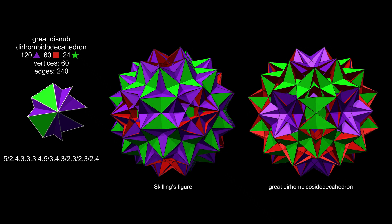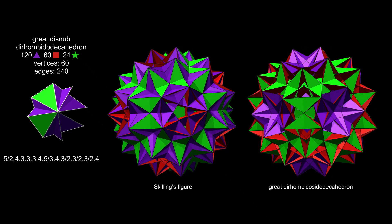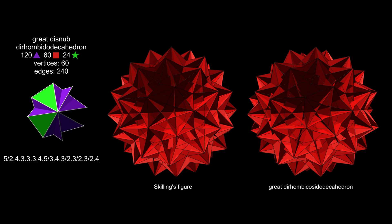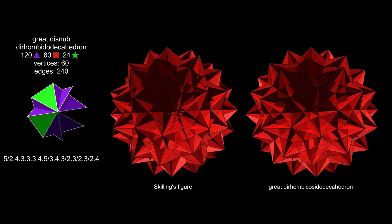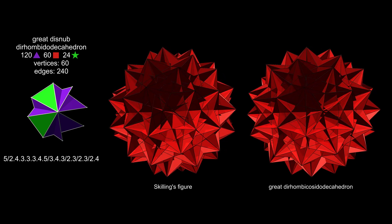It has the same vertices and edges, the same squares, all of which pass through the centre and come in coplanar pairs, and the same pentagrams.